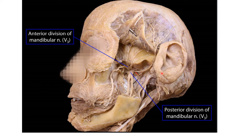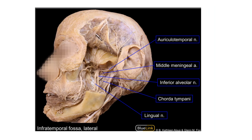The auriculotemporal nerve also carries secretomotor fibers to the parotid gland. The posterior division also gives the lingual nerve and the inferior alveolar nerve. The lingual nerve is a smaller terminal branch of the posterior division; it is sensory to the mucous membrane of the anterior two-thirds of the tongue, excluding the vallate papillae.